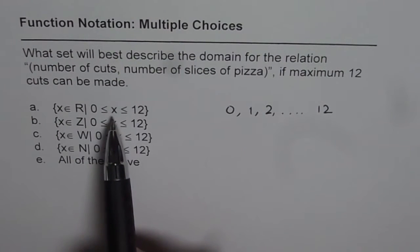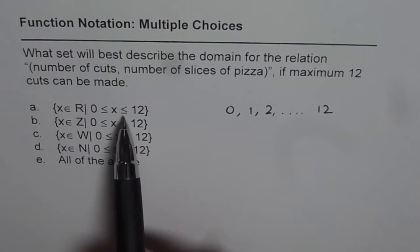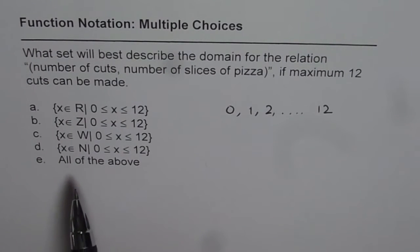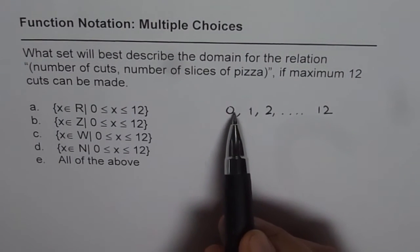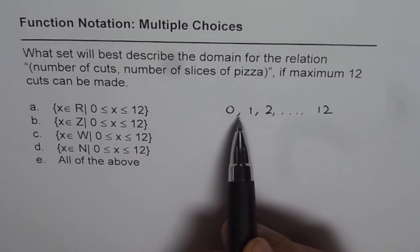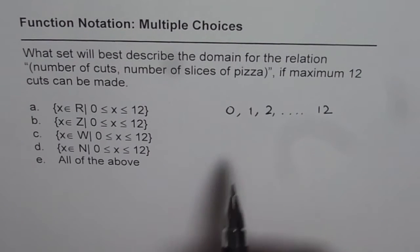...real numbers where x is greater than or equal to 0 and less than or equal to 12. Real numbers means every number in between them also, for example 0.1, 0.2. Those are not the number of cuts, so this is incorrect.